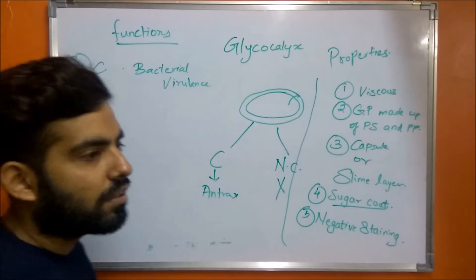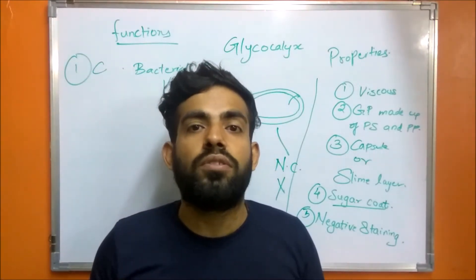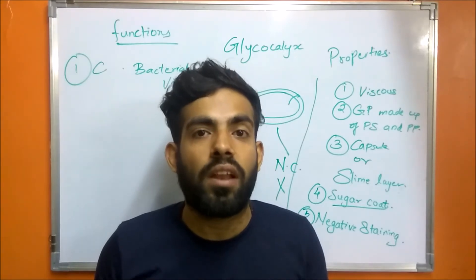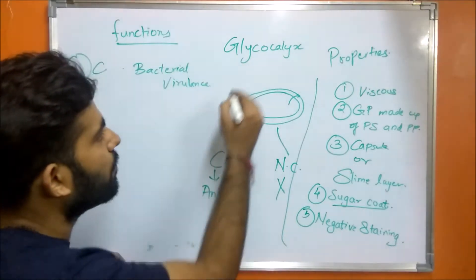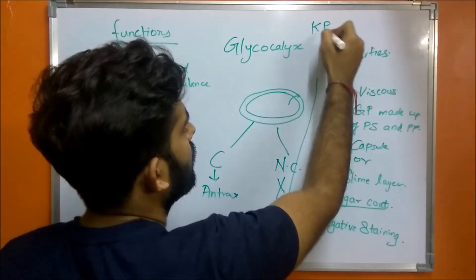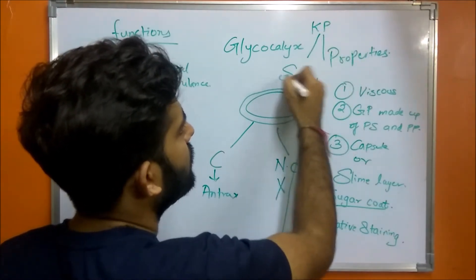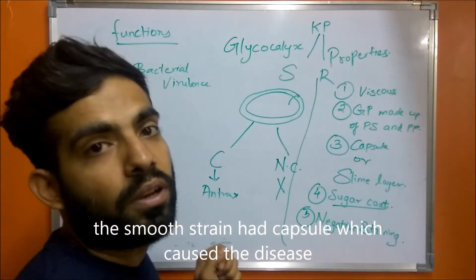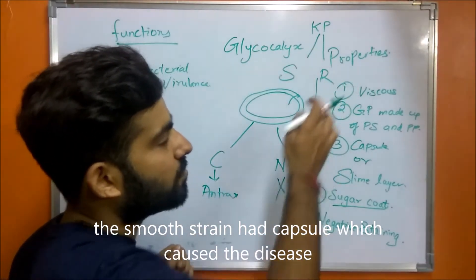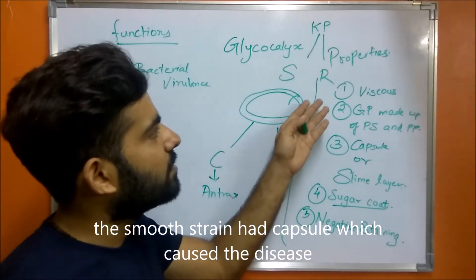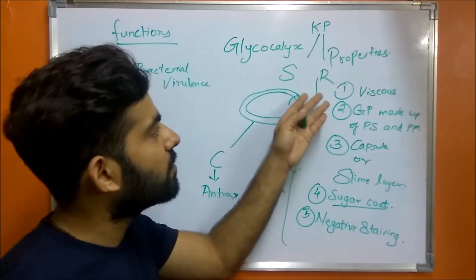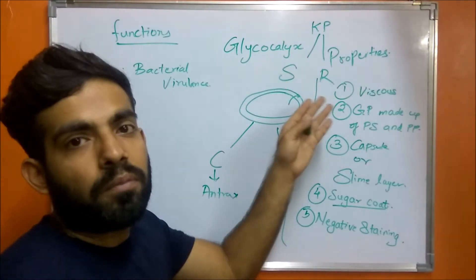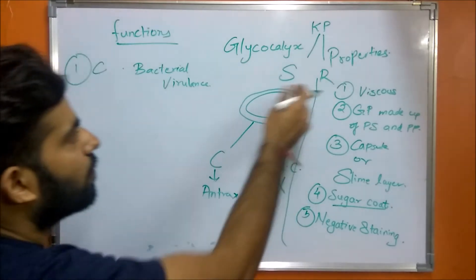Another example is the organism used in Griffith's transformation experiment, Streptococcus pneumoniae. It had a smooth strain and a rough strain. The smooth strain was able to cause the disease because it had a capsule, while the rough strain was not able to cause disease because it lacked the capsule. So absence of capsule does not lead to disease.